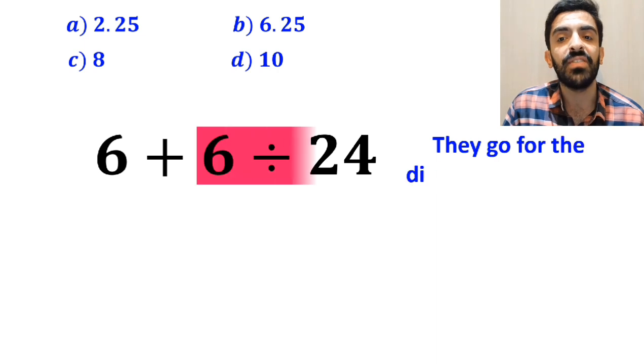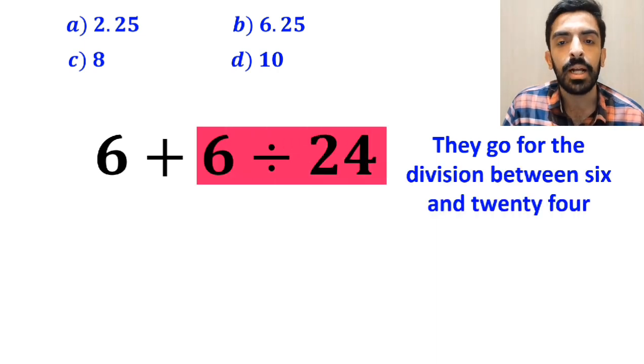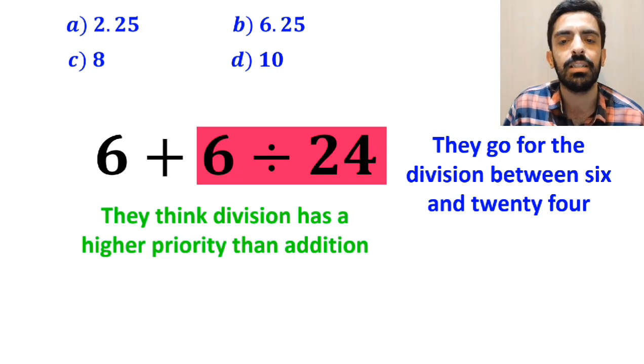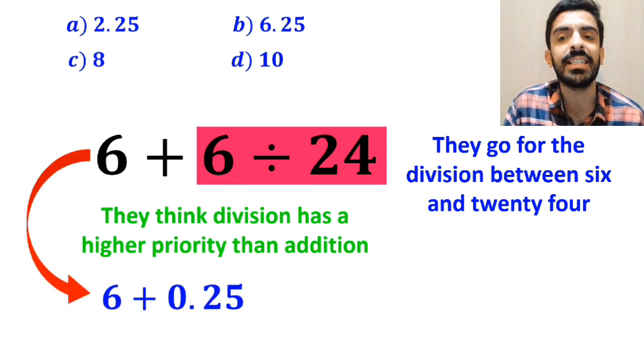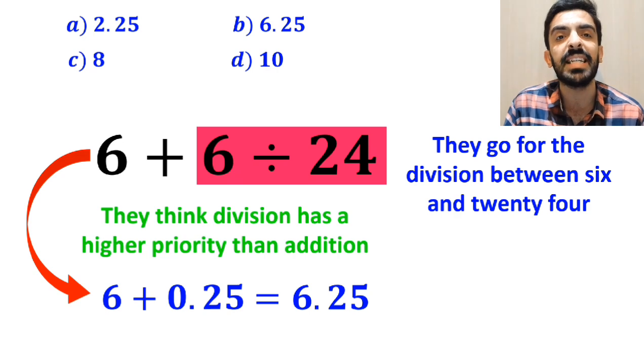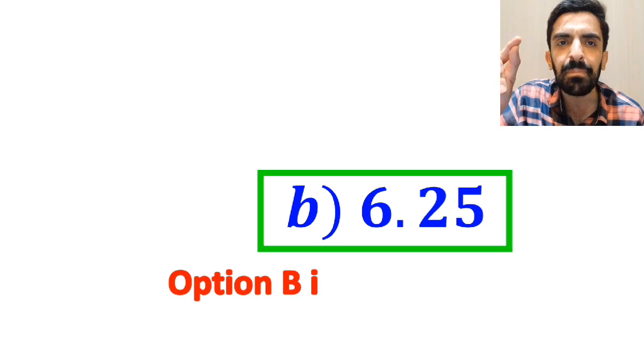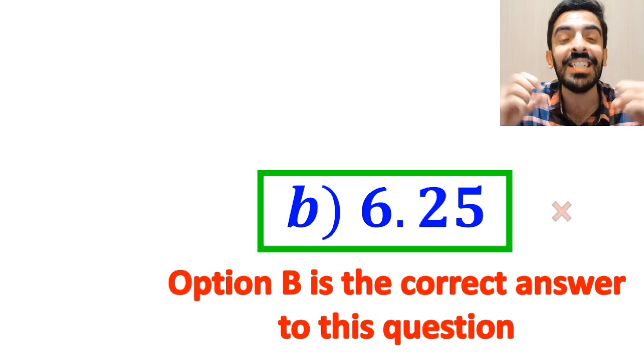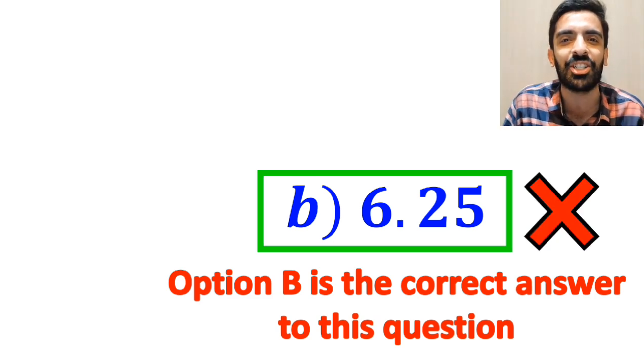Then, they go for the division between 6 and 24 because they think division has a higher priority than addition. And they write this expression as 6 plus 0.25, which ultimately gives them the answer 6.25. And immediately, they conclude that option B is the correct answer to this question. But I have to say, we were tricked, and it's not the correct answer to this question.